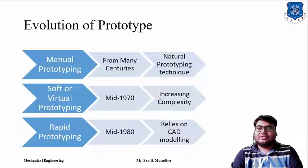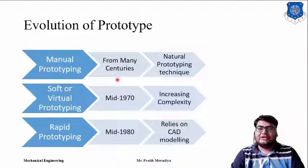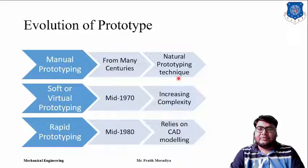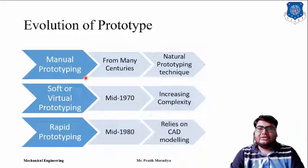Now, if we see the history of prototyping, the first is manual prototype, and manual prototyping was there from many centuries — from the inception of the product itself. What people used to do is, if they think that they have an innovative idea and want to develop a new product, they will first try that idea, and that first try is known as a prototype. There are many ways to develop a manual prototype: people used to develop prototypes from clay, wooden models, and cardboard models.